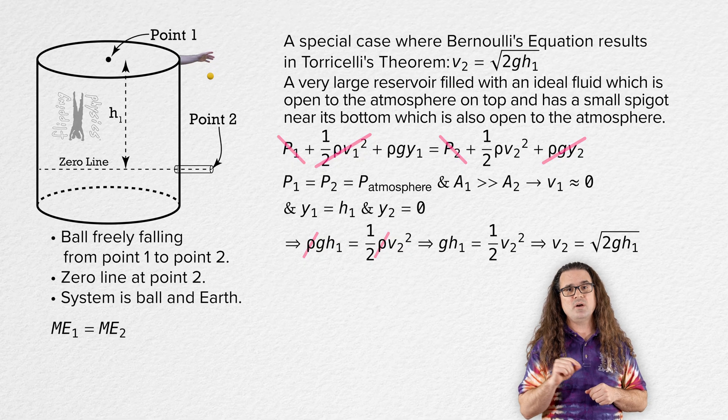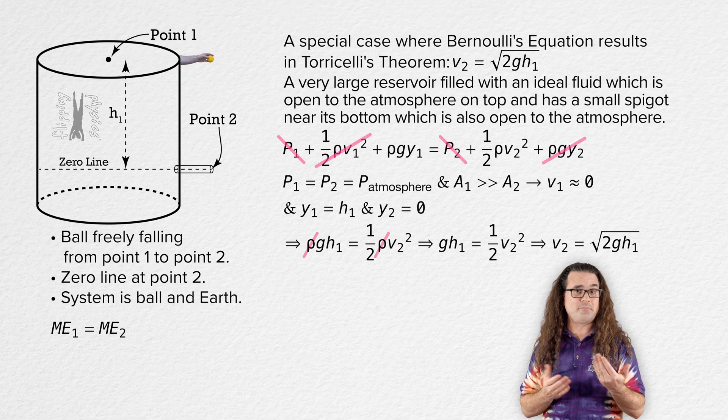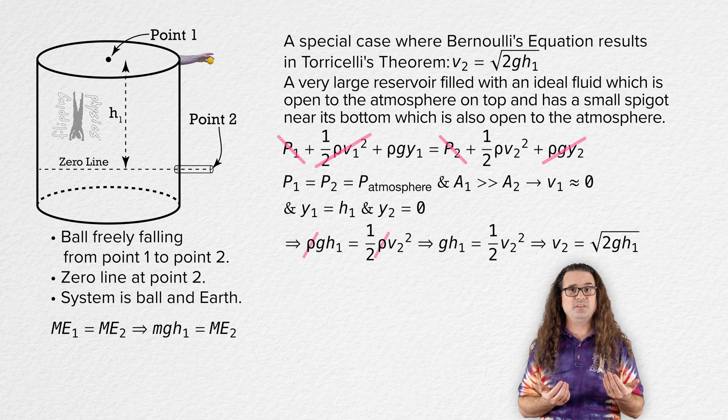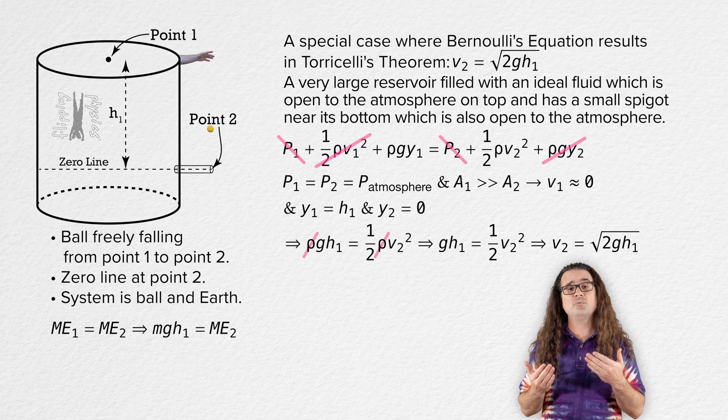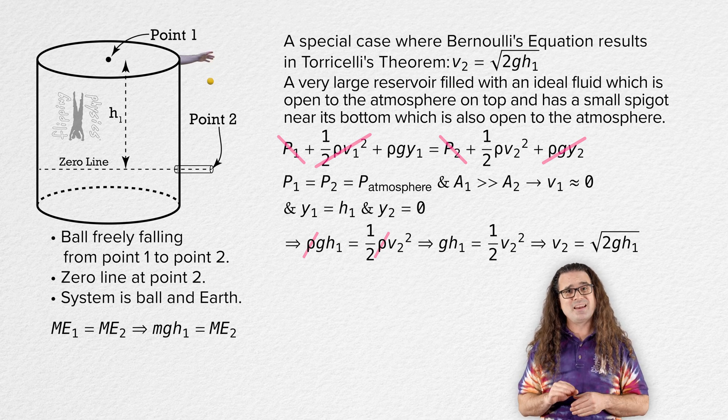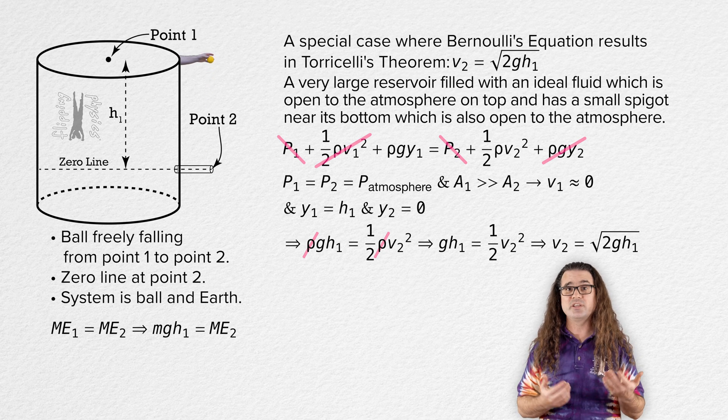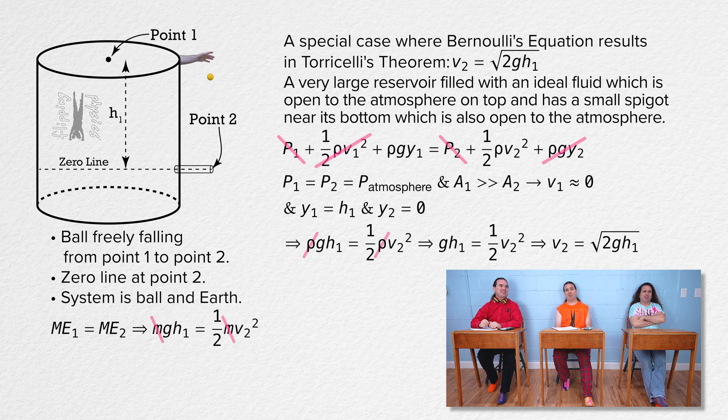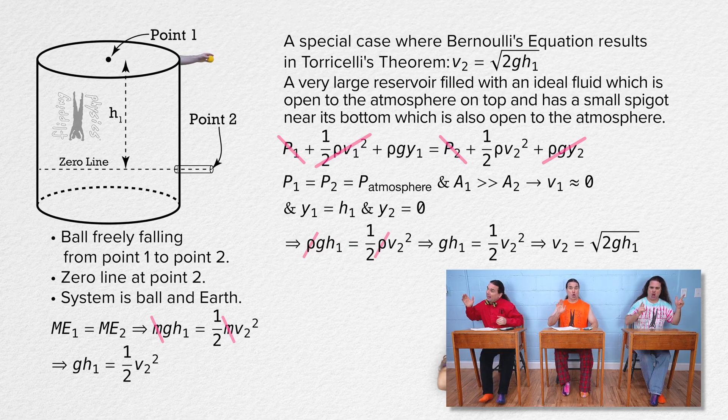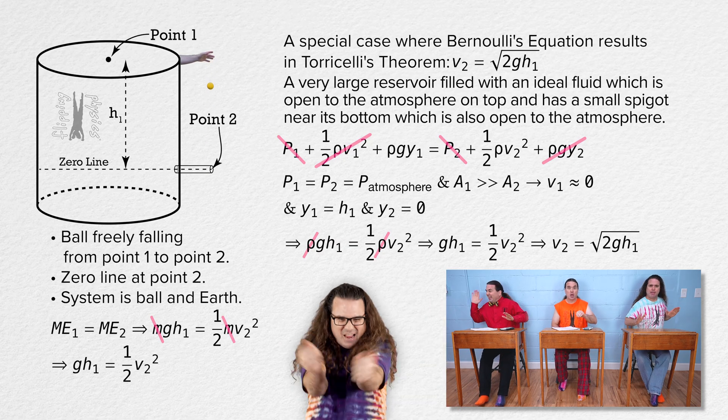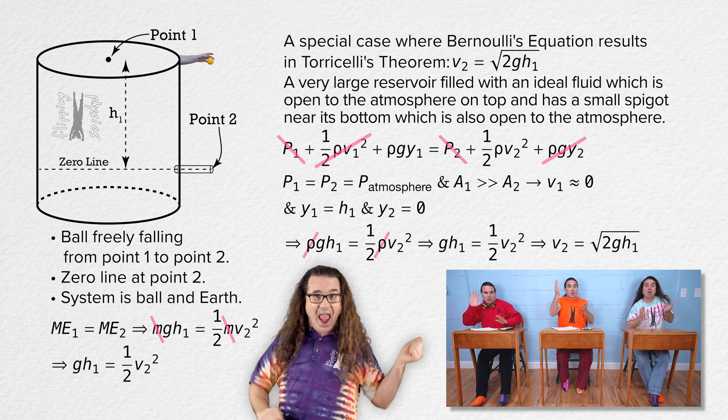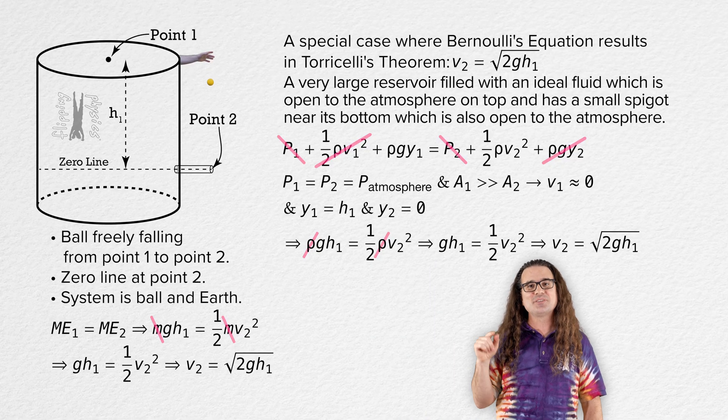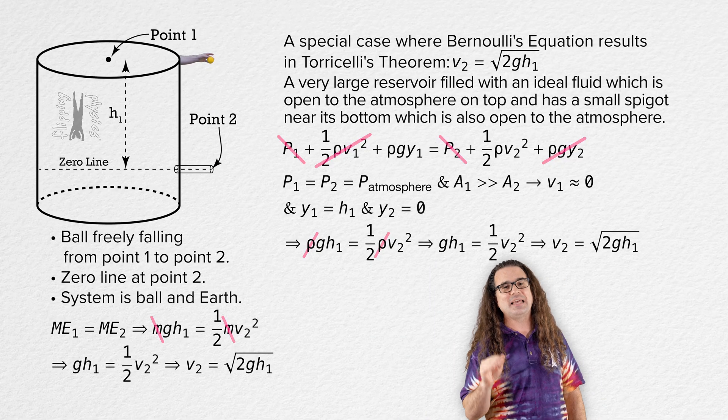We get mechanical energy at point 1 equals mechanical energy at point 2. The only type of mechanical energy our system has at point 1 is gravitational potential energy, mass times gravitational field strength times vertical height above the horizontal zero line at point 1, which is h1. The only type of mechanical energy our system has at point 2 is kinetic energy, 1/2 mass times speed at point 2 squared. And everybody brought mass to the party. And we get that the speed of the ball at point 2 equals the square root of 2 times gravitational field strength times height 1.